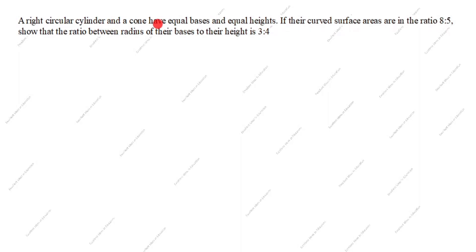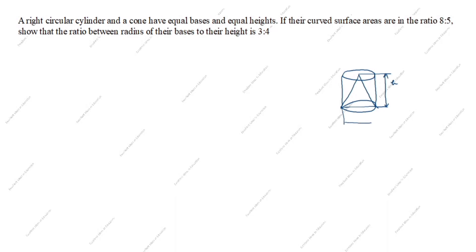A right circular cylinder and the cone have equal base and equal height. First we will draw the cylinder, we will draw the cone also. The cone height and base is same for cylinder and cone, so this height is same. Base also same for cylinder and cone, so this radius r is also same for cylinder and cone.